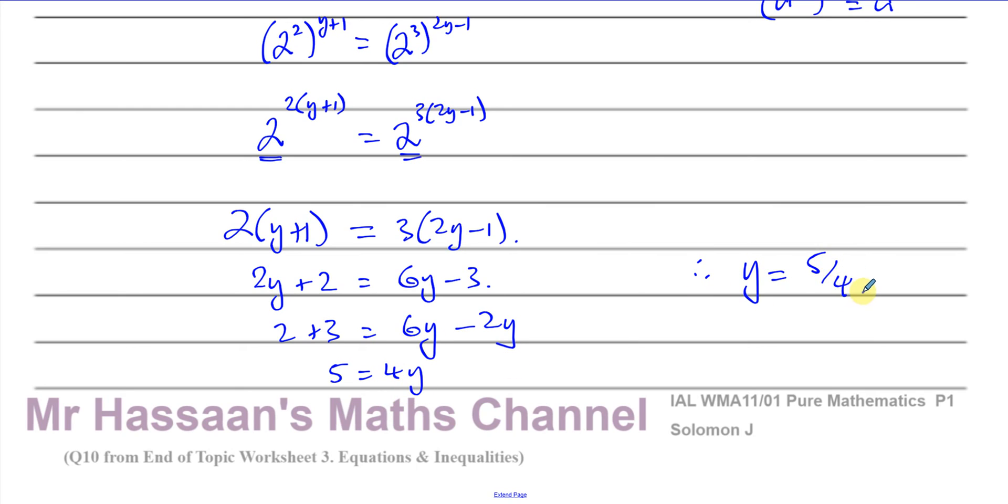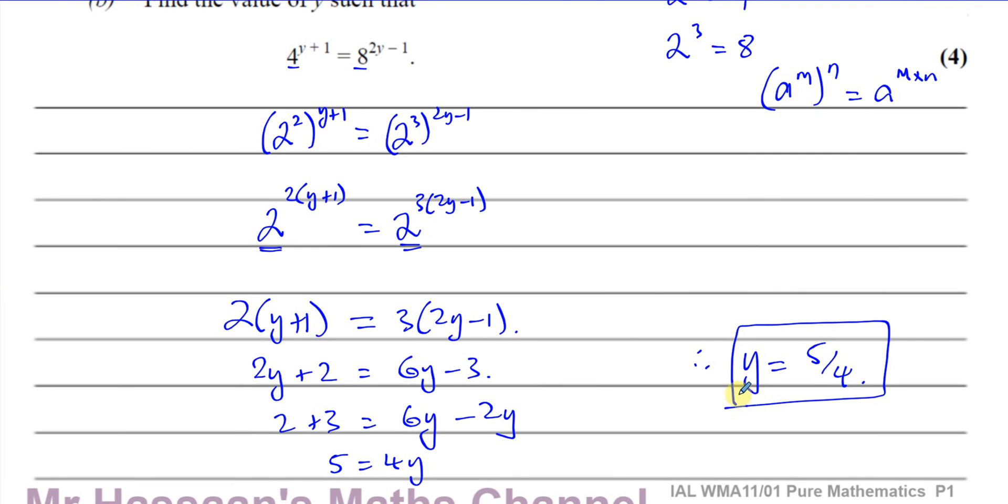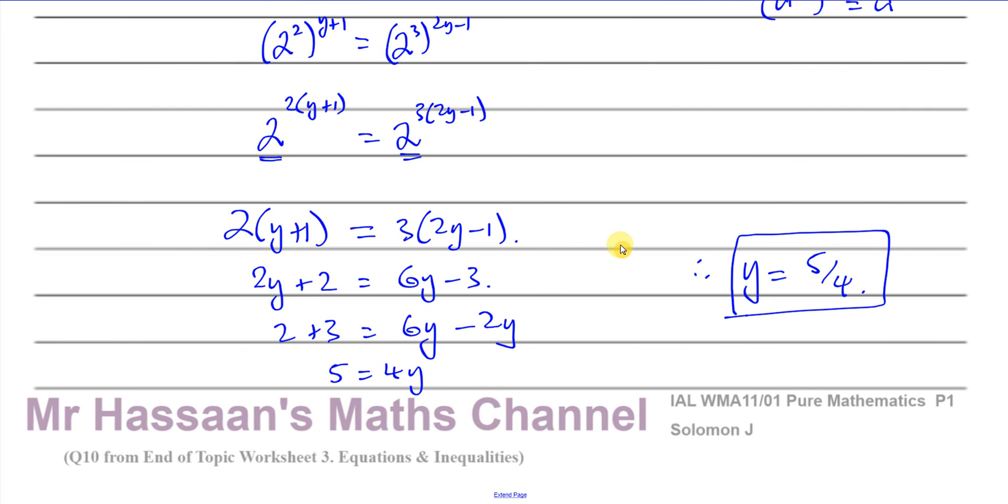And that is that basically. That's a pretty simple question but the objective is to make the bases the same number. Once you make the bases the same then the powers must be the same and you can find the value of y which satisfies the equation.